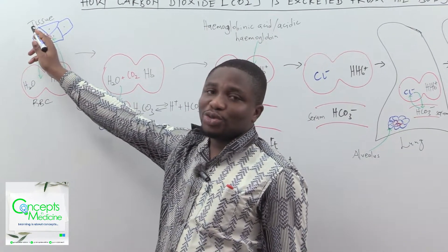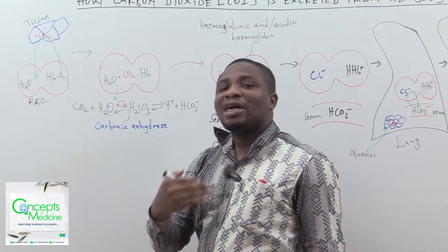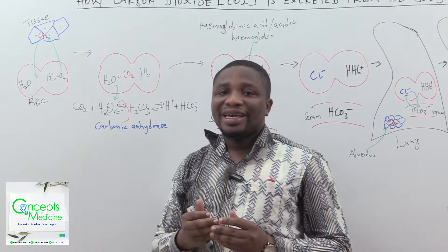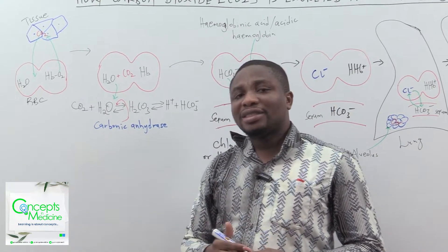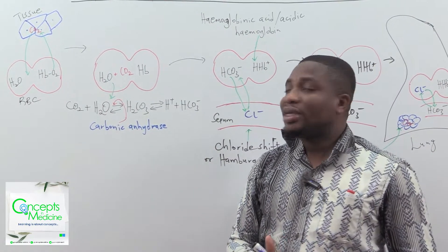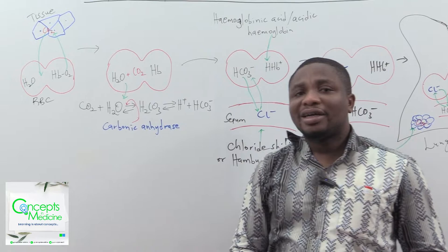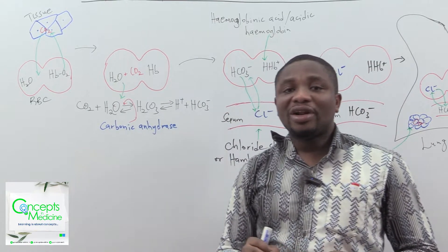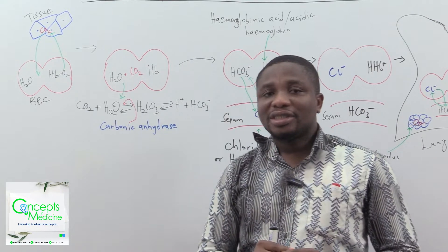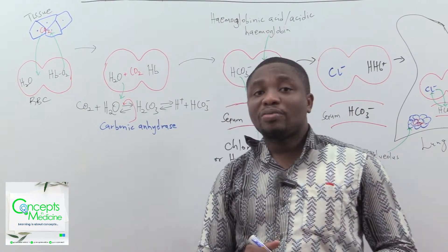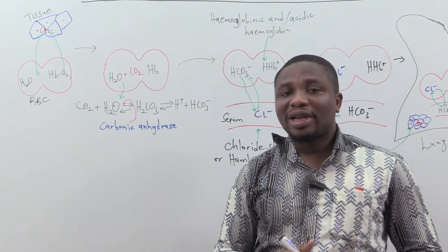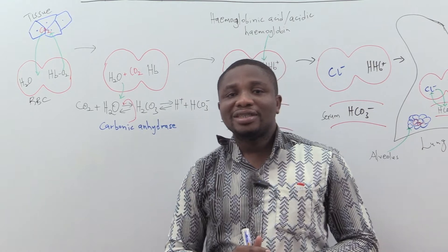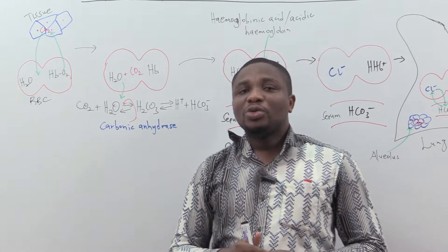A combination of cells gives us tissues. At the cellular level, cellular metabolism takes place by processes such as glycolysis and the Krebs cycle. The byproducts of these two processes will be carbon dioxide. The carbon dioxide production occurs in different organelles: glycolysis produces CO₂ in the cytoplasm — specifically the cytosol — while the Krebs cycle (citric acid cycle) produces CO₂ in the mitochondria.